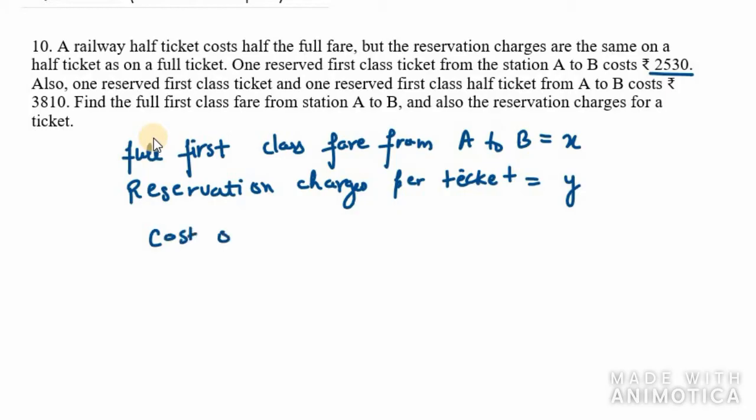The cost of one full ticket from A to B is 2530. In the first line we have said that the total price of the ticket is 2530. This means first class fare and reservation charges total 2530. So x plus y equals 2530.